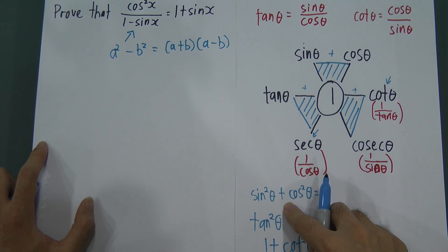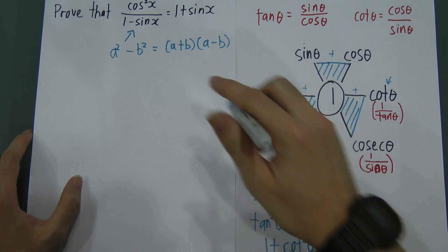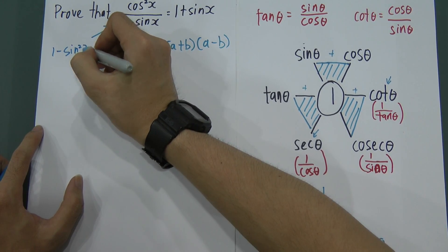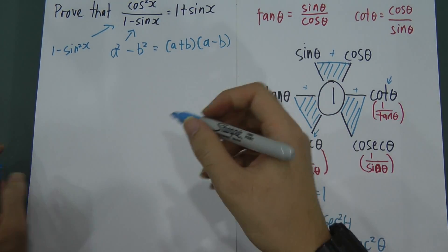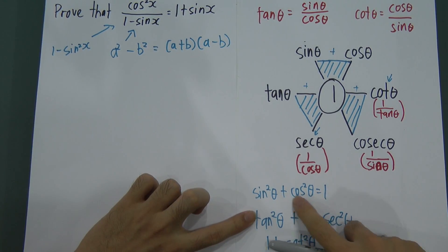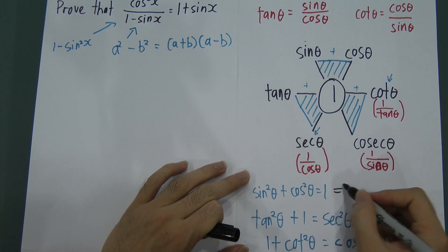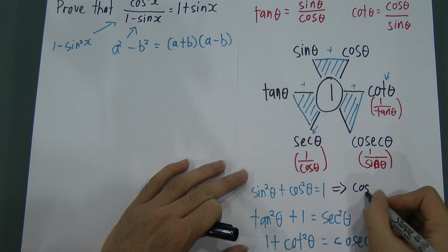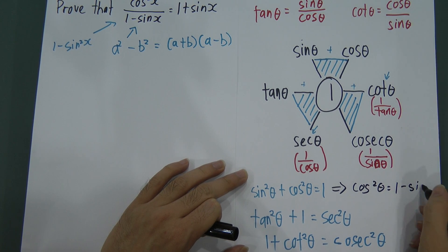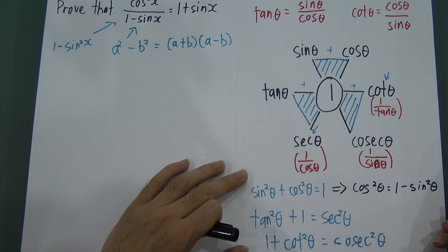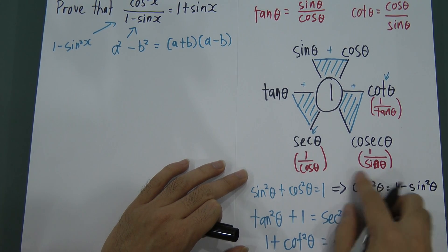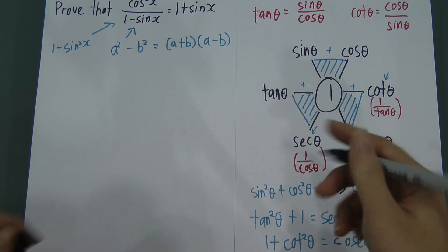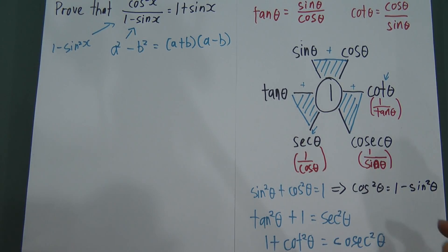The objective is to change the bottom part to become cos²x. To do that, I apply sin²x + cos²x = 1. If I can change the bottom to (1 − sin²x), then I can get cos²x, because cos²x = 1 − sin²x. So if I get cos²x on the bottom I can simplify. Of course this is based on experience — you need to do more of these questions to build intuition for solving proofs.